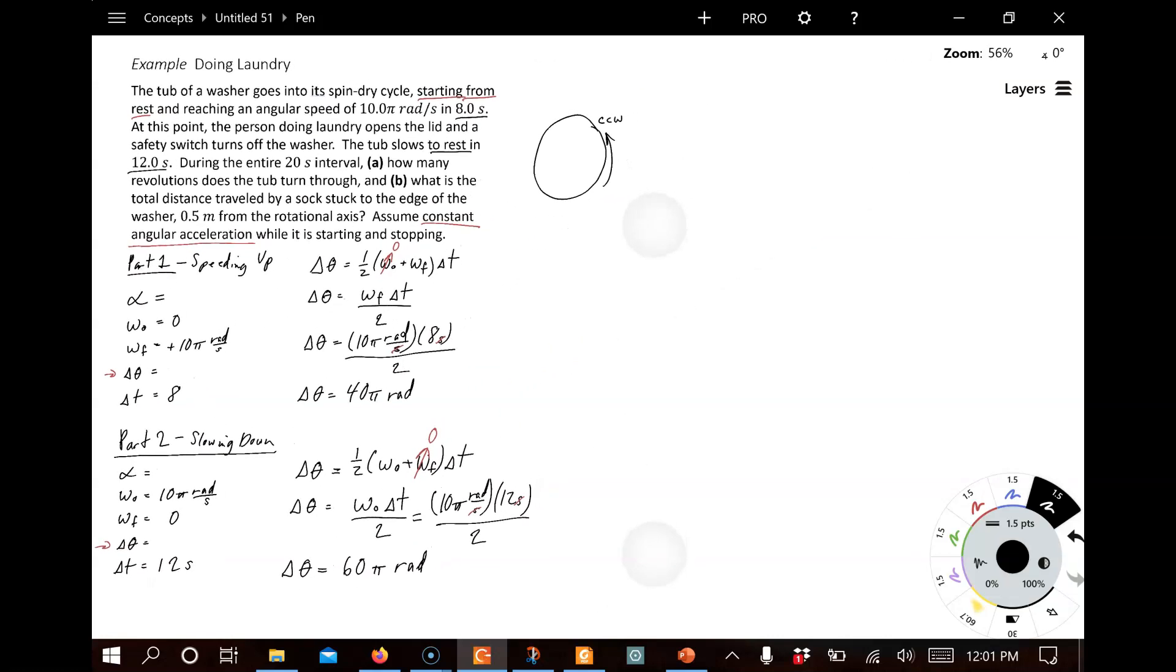Now, in order to solve the question for part A, how many revolutions does the tub turn through in the entire 20-second interval? Well, the Δθ_total here is going to be the sum for part one and part two. So, we've got 40π radians plus 60π radians, which is going to give us a total angular displacement here for the 20-second interval of 100π radians. Now, we want to convert that for part A into how many complete revolutions? Well, that's a unit conversion. So, we're going to start with 100π radians. And we know that for each revolution that you pass through 2π radians of angle. And if we calculate that, the π's and the radians cancel. And we are going to divide 100 by 2. We're going to get 50 complete revolutions there of the dryer.